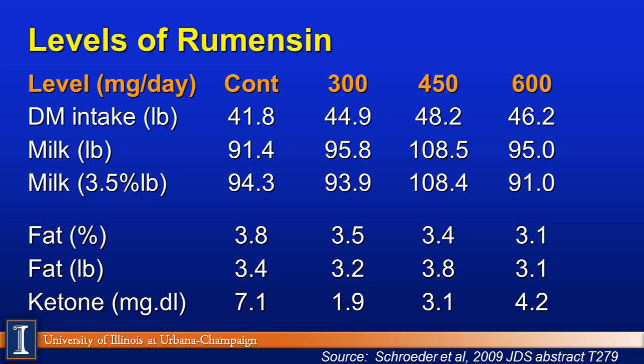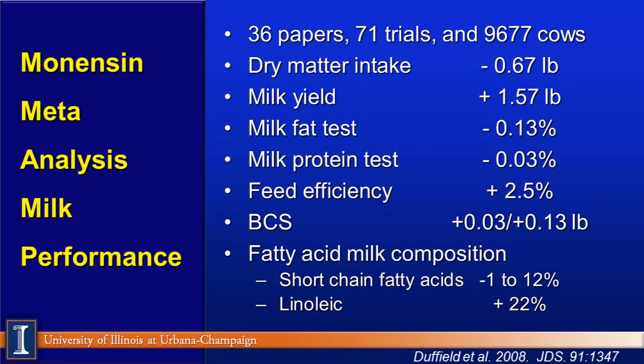About one in five dairymen at my meetings know what level they're feeding Rumensin. The Canadian group did a beautiful meta-analysis: 36 papers, 10,000 cows. Except for bovine somatotropin, this is probably the most highly researched product in North America. Looking at all the studies: slight decrease in dry matter, about 1.6 pounds more milk, slight decrease in butterfat, no effect on protein, improved feed efficiency, and a slight increase in body condition score.